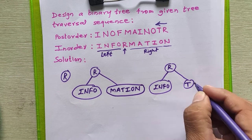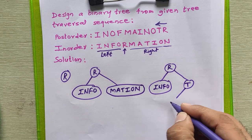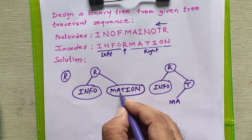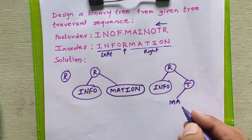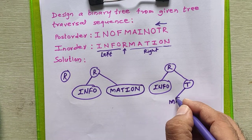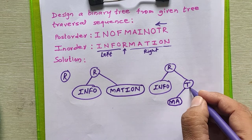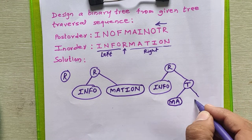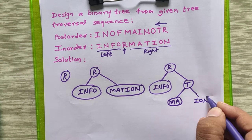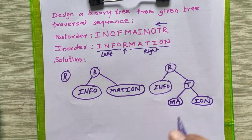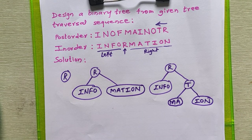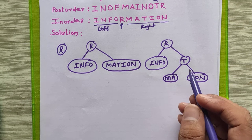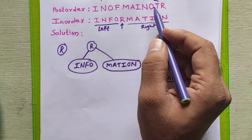We are making T as the root node for this subtree. MA, which is appearing on the left hand side in this sequence, will go to the left subtree, whereas the remaining part ION will go to the right subtree.